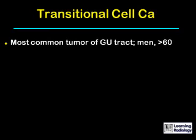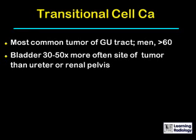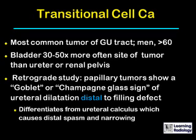Transitional cell carcinomas are the most common tumors of the GU tract, usually occurring in men over the age of 60. The bladder is 30 to 50 times more often the site of a transitional cell tumor than the ureter or the renal pelvis. On a retrograde study of the ureter, papillary tumors may show a goblet or champagne glass sign, as this case did, in which there is ureteral dilatation distal to the point of the filling defect. This differentiates a transitional cell carcinoma from a ureteral calculus, which usually causes distal spasm and narrowing.